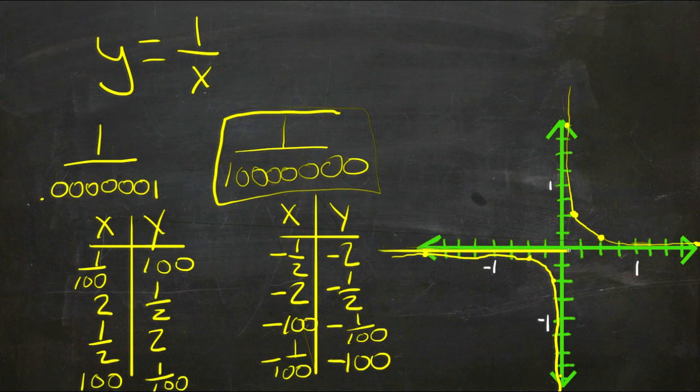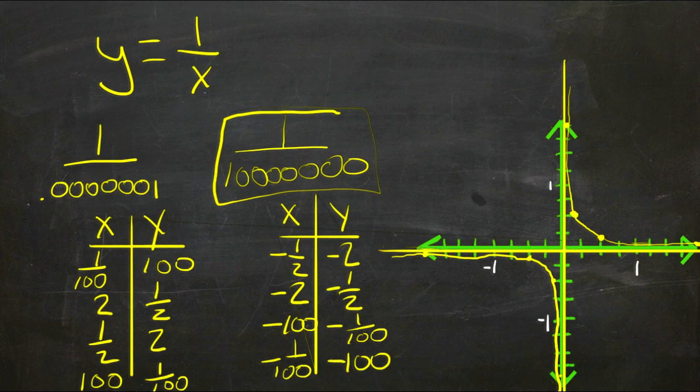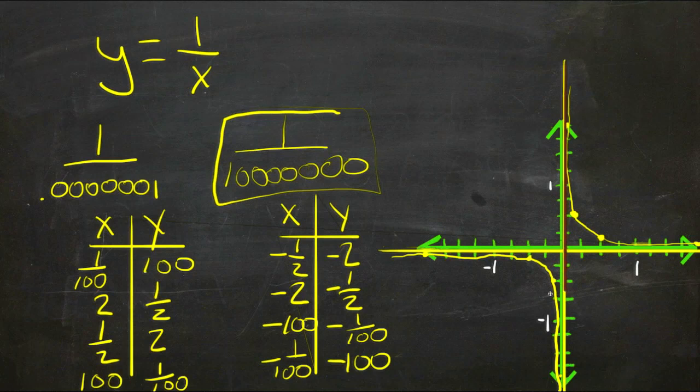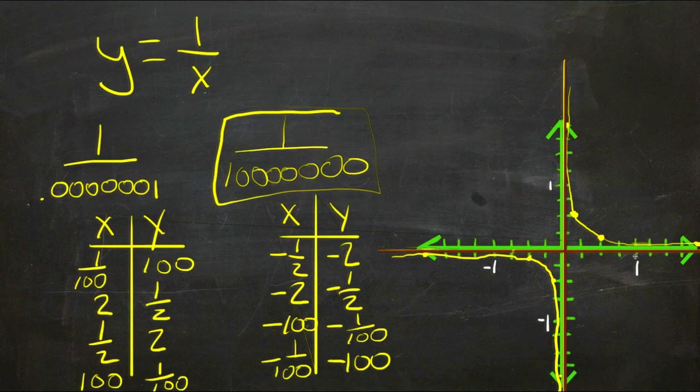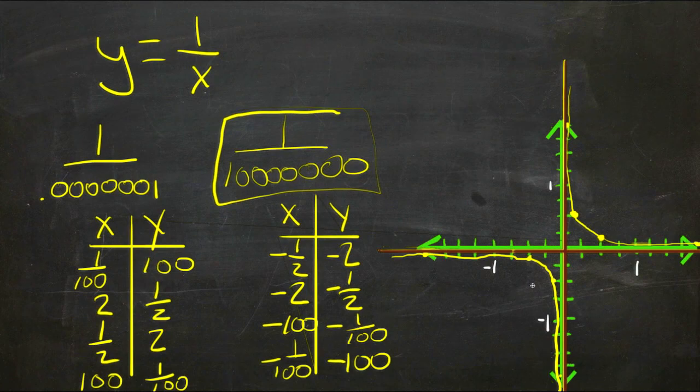And then these two lines here—the x-axis this way and the y-axis this way—become what we call asymptotes. Those asymptotes represent the numbers that x and y cannot ever become, but that we can get really, really close to. So we can get extremely close to these lines here, but we can't ever actually touch them. So our graph becomes a hyperbola that fills up this section up here and this section over here.